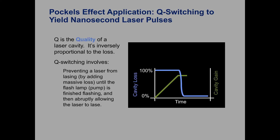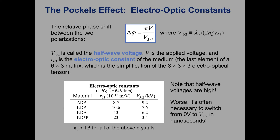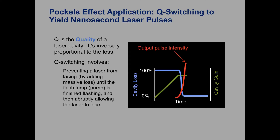At a certain point, if we change that voltage really quickly, we drop the cavity loss to zero and all of a sudden a huge pulse of light can get out of the laser. All those electrons fall to low energy levels at once and the light coming out of the laser drops back to zero. This whole process repeats, creating a pulsed laser system. Many laser writers and high-intensity laser applications for short periods of time work on this principle.